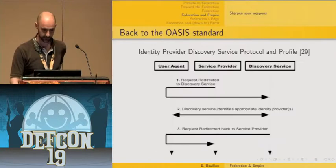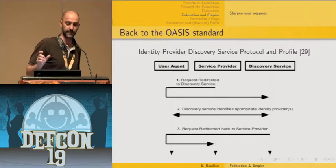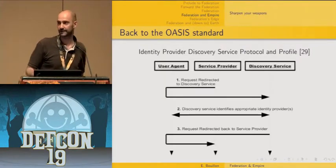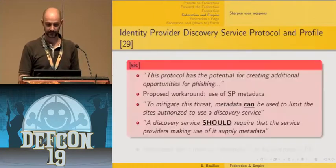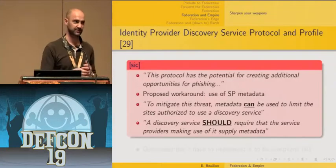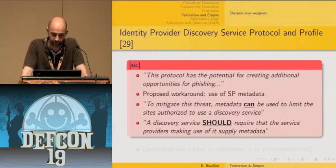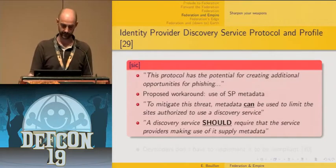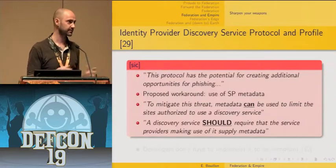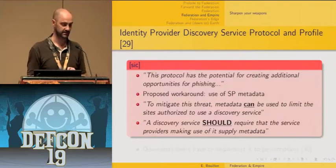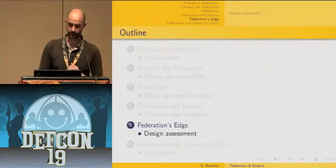These vulnerabilities are not implementation issues but specification issues. They come from the identity provider discovery service profile — the open redirection is built into the specification. When the standard was written, the authors apparently felt there was an issue — and there is a quotation: 'This protocol has the potential for creating additional opportunities for phishing.' They were aware it was dangerous and proposed a workaround based on service provider metadata, but it's only a should-level workaround, and there's no explanation of how to exchange metadata between the service provider and the discovery service. So developers implementing the standard properly still get vulnerable.